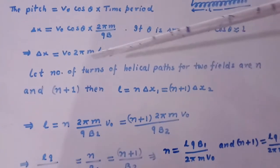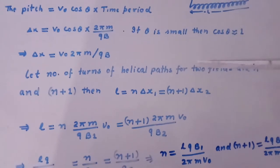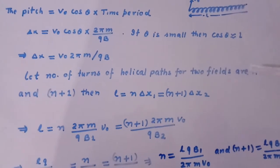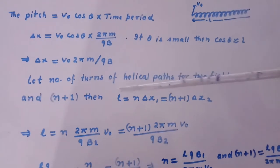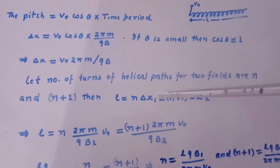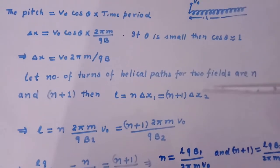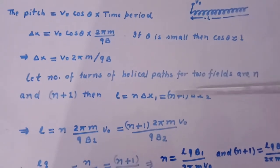Now let number of turns of helical paths for the two fields are N and N plus 1. Then L equal to N times delta X1 which is equal to N plus 1 times delta X2.